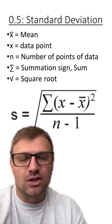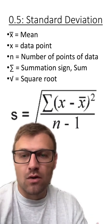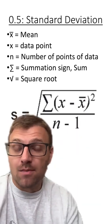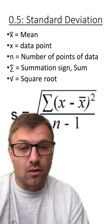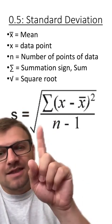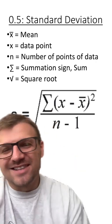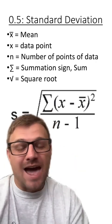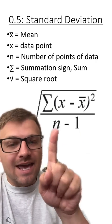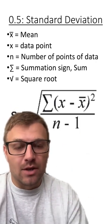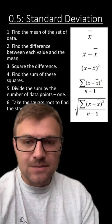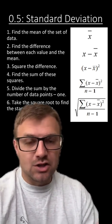Before we get into how to work through one of these problems, let's go over each of the variables. X with a line above it is called x-bar, which is the mean or average for the data. Each x represents a data point. The big E, as I like to call it, is the summation sign — this is just adding up all the values within the parentheses. And n is the number of data points for a data set.